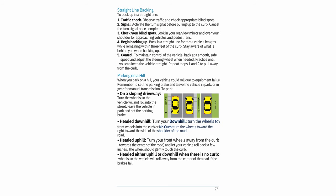Straight line backing: 1. Traffic check — observe traffic and check appropriate blind spots. 2. Signal — activate the turn signal before pulling up to the curb; cancel once completed. 3. Check your blind spots — look in your rearview mirror and over your shoulder for approaching vehicles and pedestrians. 4. Begin backing up in a straight line for 3 vehicle lengths while remaining within 3 feet of the curb — stay aware of what is behind you. 5. Control — back at a smooth, safe speed and adjust the steering wheel as needed. Repeat steps 1 and 2 to pull away from the curb.